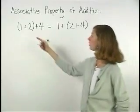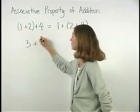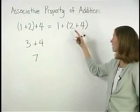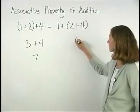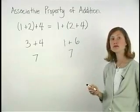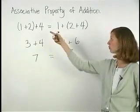For example here, 1 plus 2 gives us 3, and 3 plus 4 gives us 7. On the right side, 2 plus 4 gives us 6, and 1 plus 6 gives us 7. So the sum is the same, regardless of which way we group the addends.